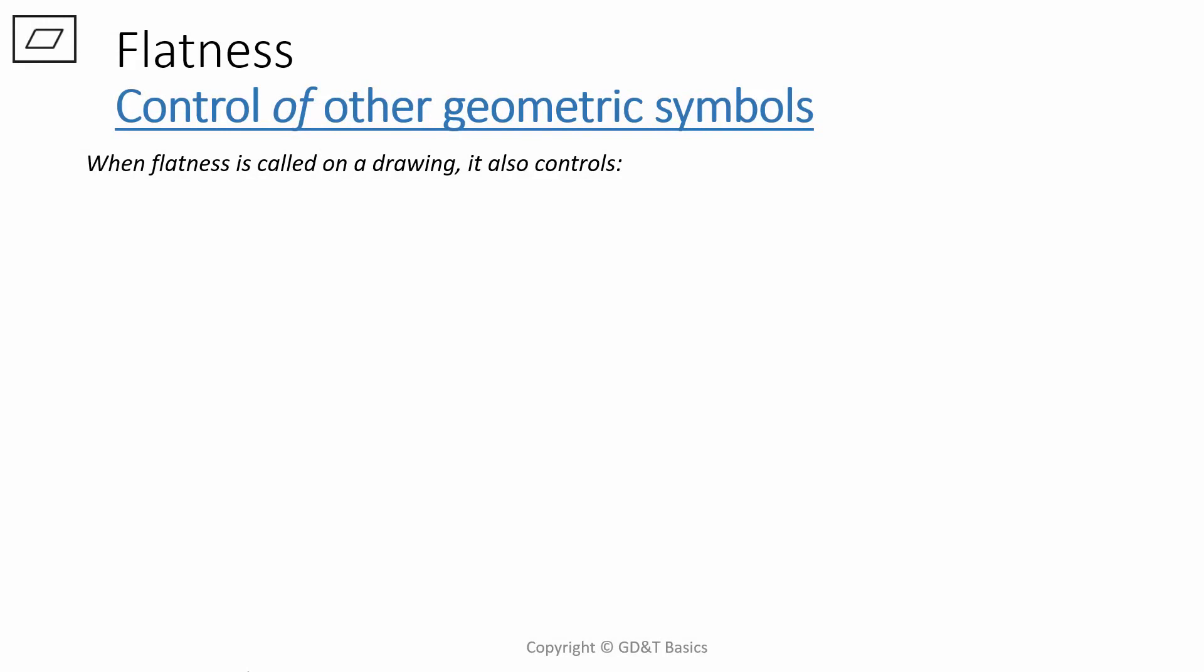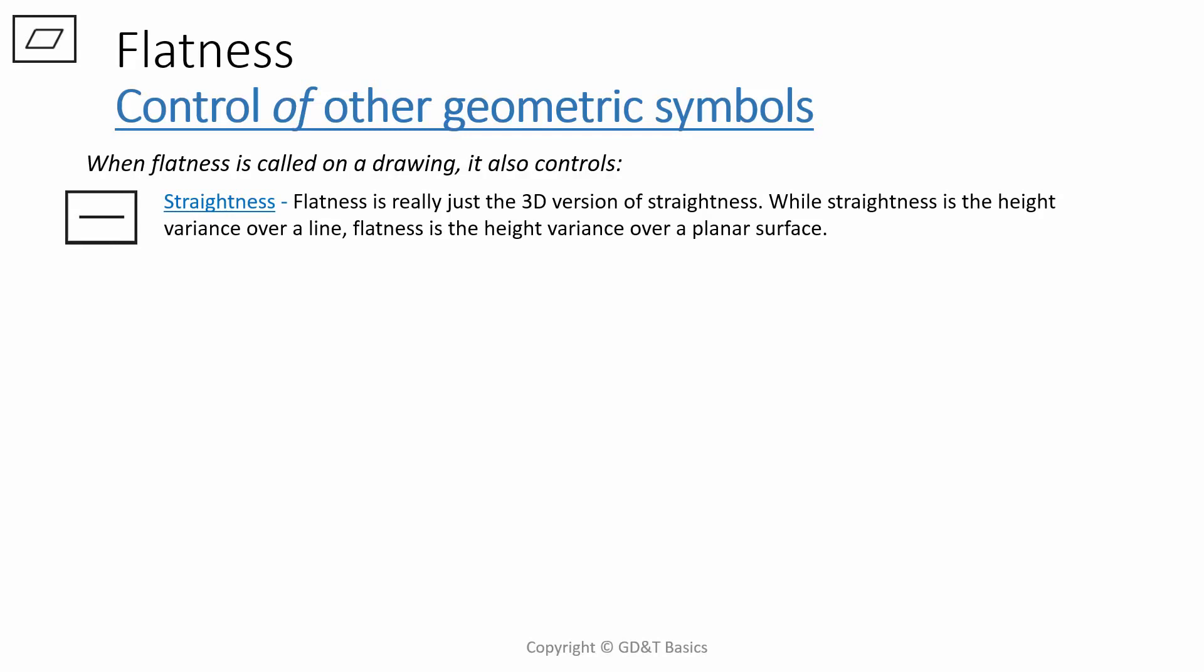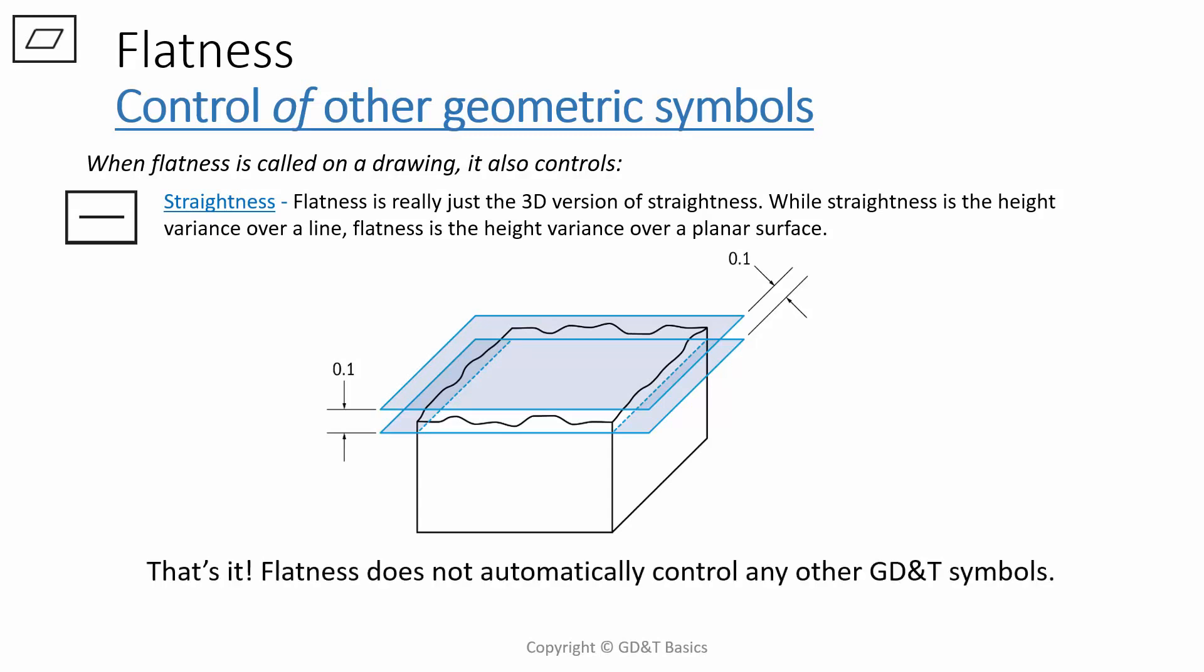When flatness is called on a drawing, it also controls straightness. Flatness is really just the 3D version of straightness. While straightness is the height variance over a line, flatness is the height variance over a planar surface. If you were calling out point one of straightness, you would only be controlling it across the one-dimensional line. You would not be controlling the height variance going back down the part. With flatness though, you are controlling both the width and the length of the part. You can see that if you have a flatness control of 0.1, you would also be controlling the straightness in both directions. Flatness does not automatically control any other GD&T symbols, only straightness.